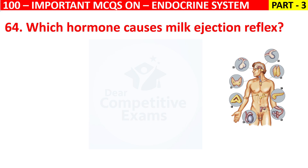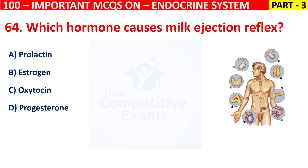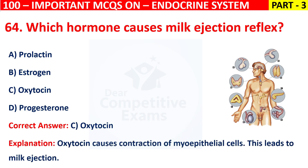Your options are Prolactin, Estrogen, Oxytocin, or Progesterone. The correct answer is C, that is Oxytocin. Oxytocin causes contraction of myoepithelial cells. This leads to milk ejection.